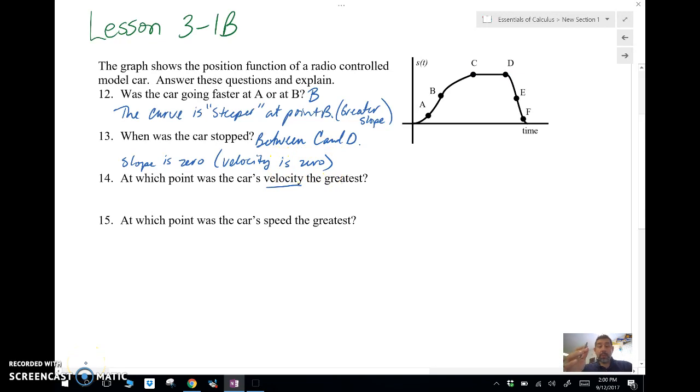We want to know at which point the car's velocity is greatest. Now velocity, remember, is negative or positive because it is a vector. So when we want it to be the greatest, we want the velocity to be positive, not negative. So we're looking for the slope at which it's the greatest positive. Well, these are pretty steep here, but they're negative slopes. This has the steepest positive slope at B. So we would say that the greatest velocity is B because the slope of the position is greatest at point B.